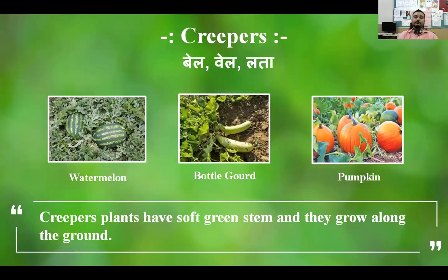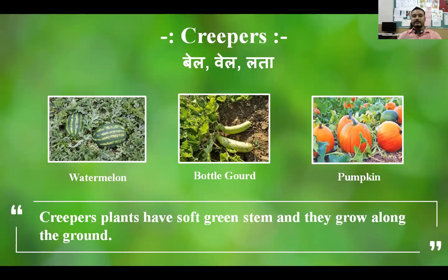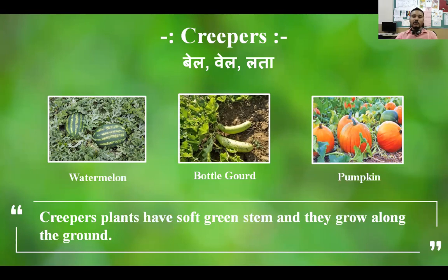The next type is creeper. You might have seen pumpkins, bottle gourd, and watermelons. These plants never grow up from the ground — they just grow along the ground. In Marathi or Hindi it is also called 'bel' or 'vel', and sometimes in Marathi it is also called 'Lata'. As you can see, there is a watermelon plant growing along the ground, a bottle gourd also growing along the ground, and a pumpkin plant.